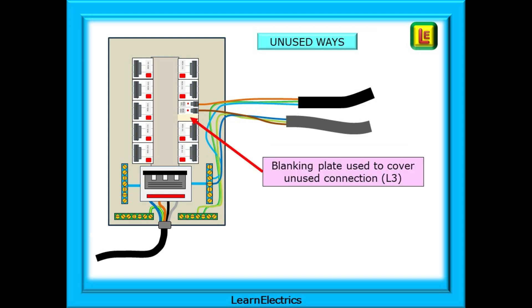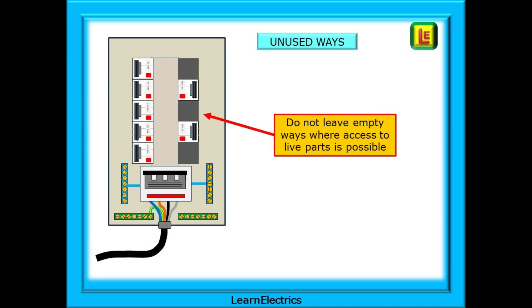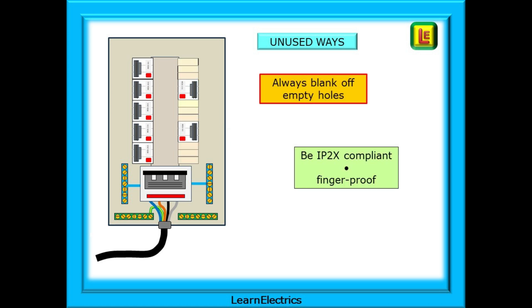In this example, we are not using the L3 terminal. So, we must blank the hole off in the cabinet cover to prevent access to live parts. We must do this with all unused ways. We do not leave empty ways where access to live parts is possible. Always blank off empty holes so that we are IP2X compliant. IP2X is finger-proof. Objects greater than 12.5mm cannot get into the cabinet and touch live parts. A dodge that many electricians will use if they don't have blanking plates is to put an unused circuit breaker into the hole and leave it switched off. Far better to do that than to leave an open hole.